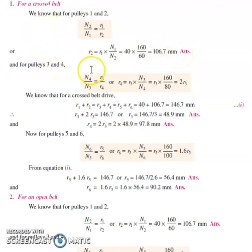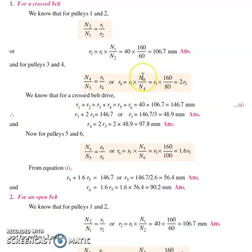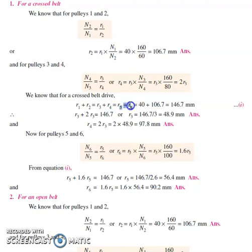For pulleys 3 and 4, the similar equation is n4/n3 = r3/r4. Expressing r4 in terms of r3: substituting n3 = 160 rpm and n4 = 80 rpm gives r4 = 2·r3. For a crossed belt drive, the key formula is: r1 + r2 = r3 + r4 = r5 + r6.